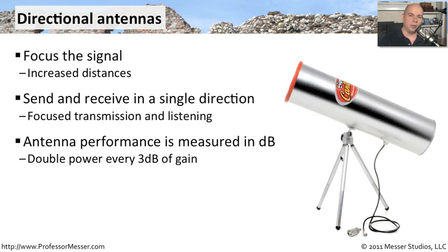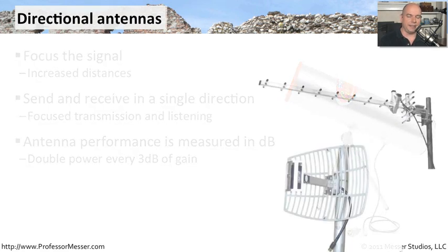Antenna performance is measured in something called decibels, abbreviated dB. Every time you add 3 dB, you have effectively doubled the power. So you can see the scale of decibels is very logarithmic in that way. Every time you see a 3 dB gain, you've effectively doubled how much signal you would be putting into that antenna.